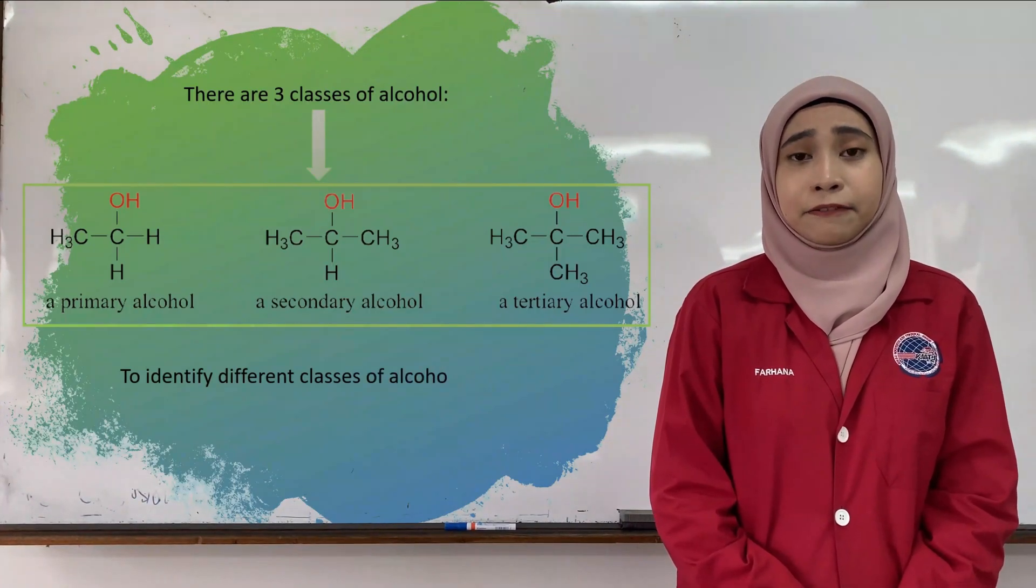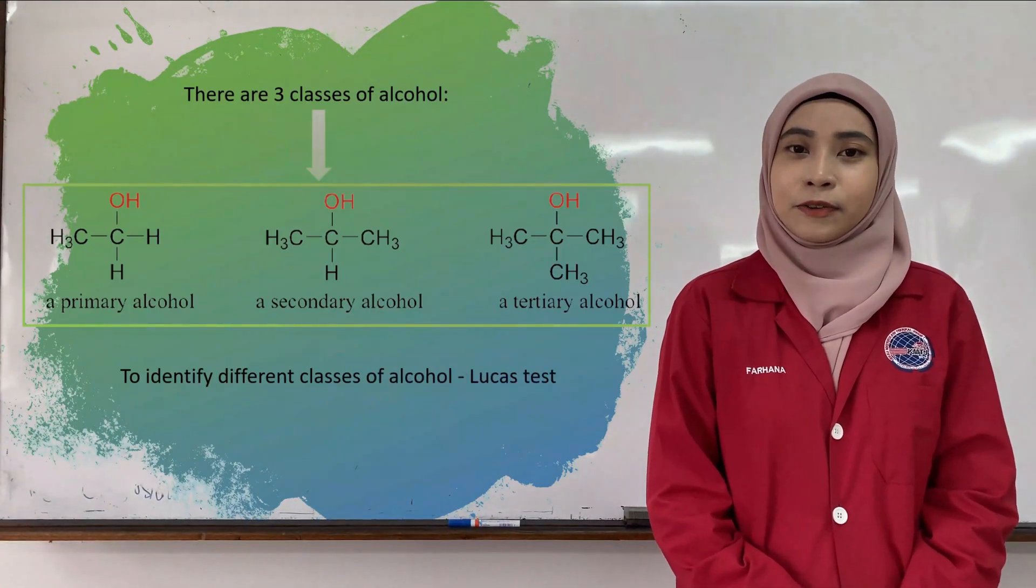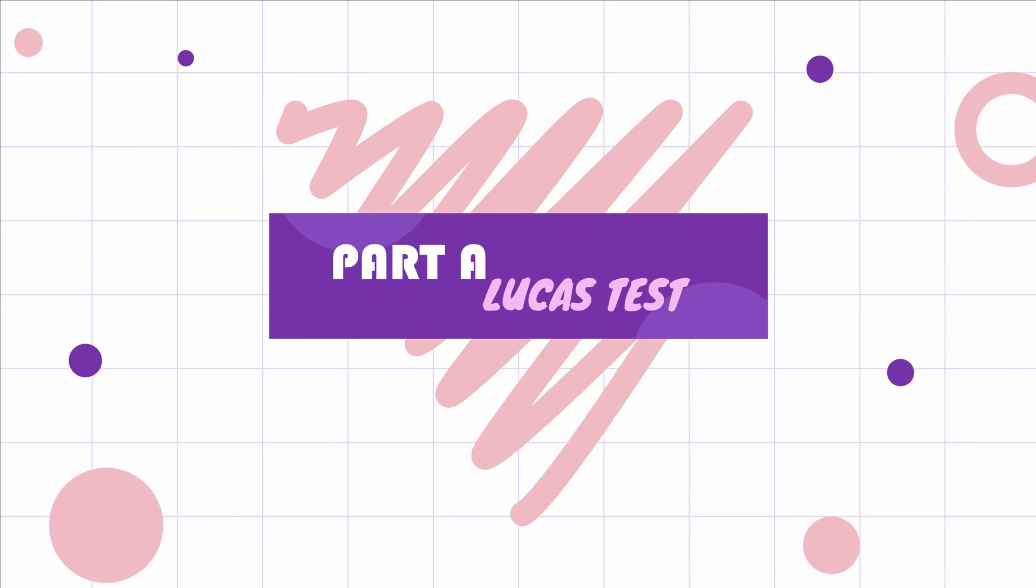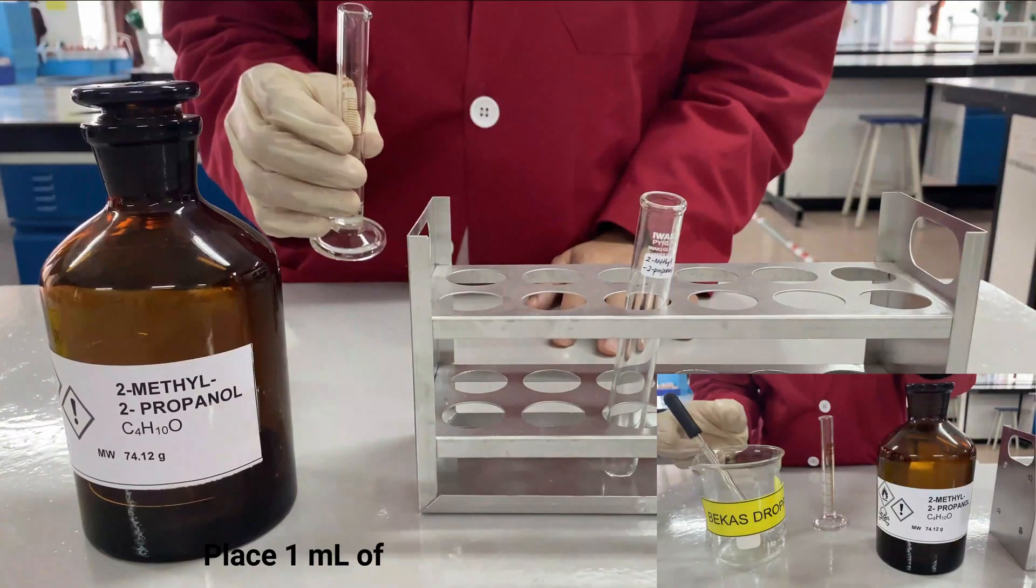In order to identify classes of alcohol, we are going to conduct the first part of the experiment, which is the Lucas test.